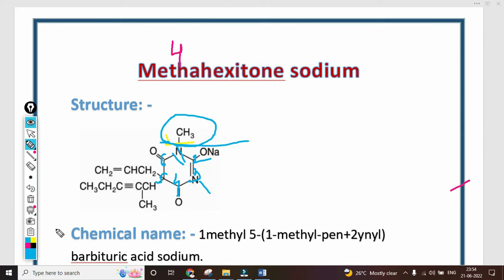At the five number position, whatever extra substituent is attached must be mentioned, and the first position substituent must also be mentioned in the chemical name. The chemical name of methohexitone sodium is 1-methyl-5-(1-methyl-pent-2-ynyl) barbituric acid sodium. 1-methyl means the first carbon - which group is attached to this carbon? Methyl.